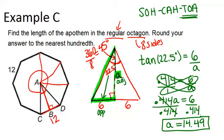At this point, even though it didn't ask us, we could figure out the area of this octagon by finding the area of the triangle and multiplying it by 8, because the octagon is made up of 8 congruent isosceles triangles. The area of the triangle would be base of 12 times height, which is the apothem, 14.49, divided by 2. And then you'd take that answer and times it by 8.